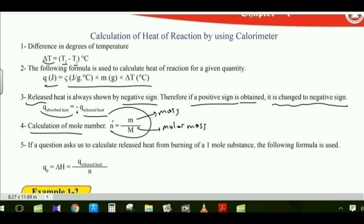The mole number n equals small m over big M, where small m is mass and big M is molar mass. Qp equals delta H, and it is the released heat over moles, because we calculate the released heat from burning one mole of a substance.